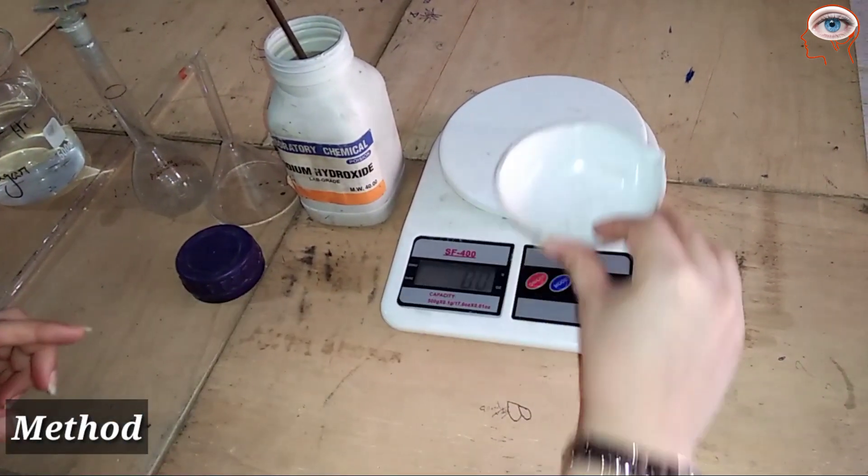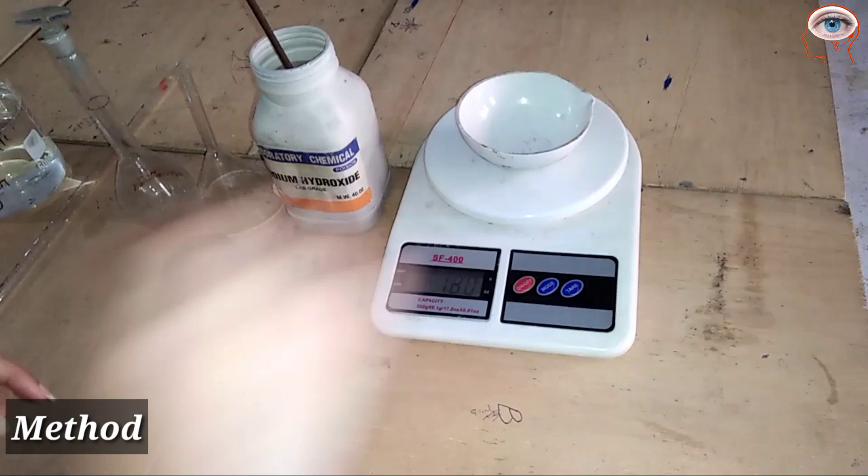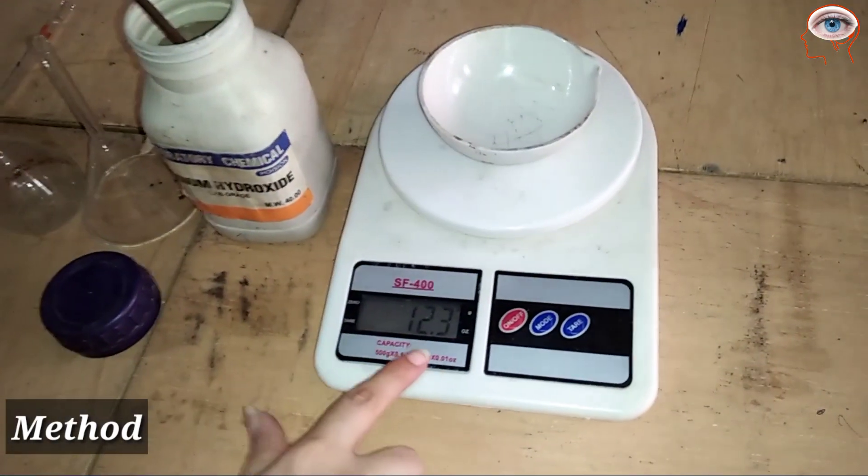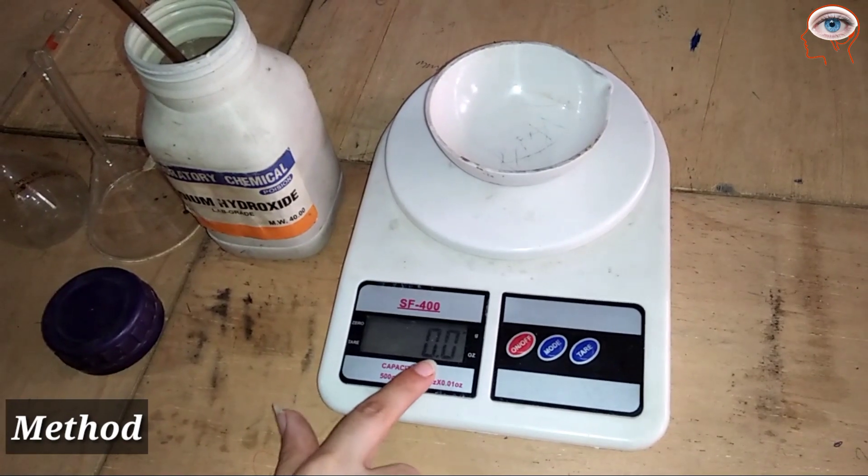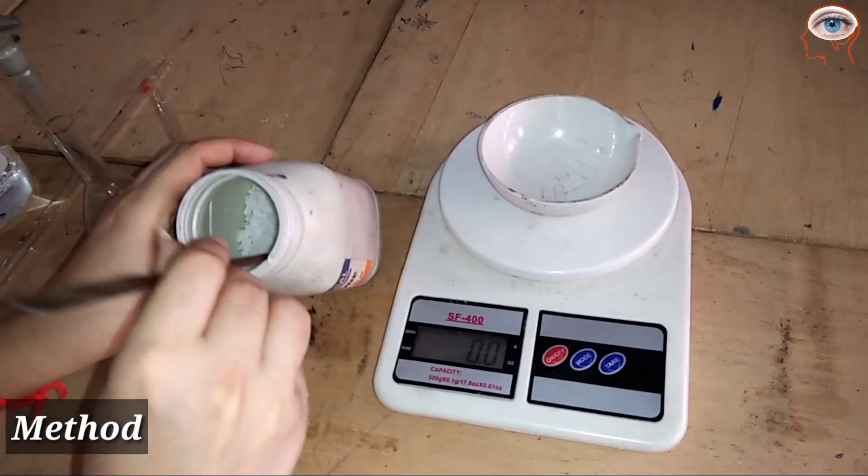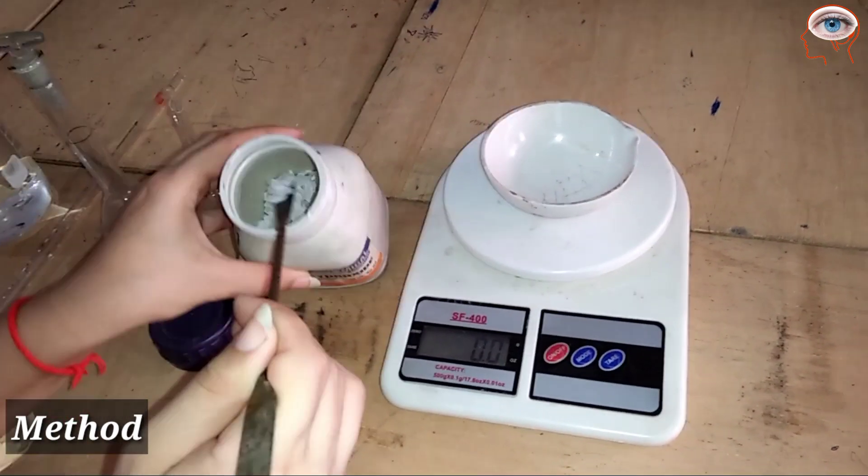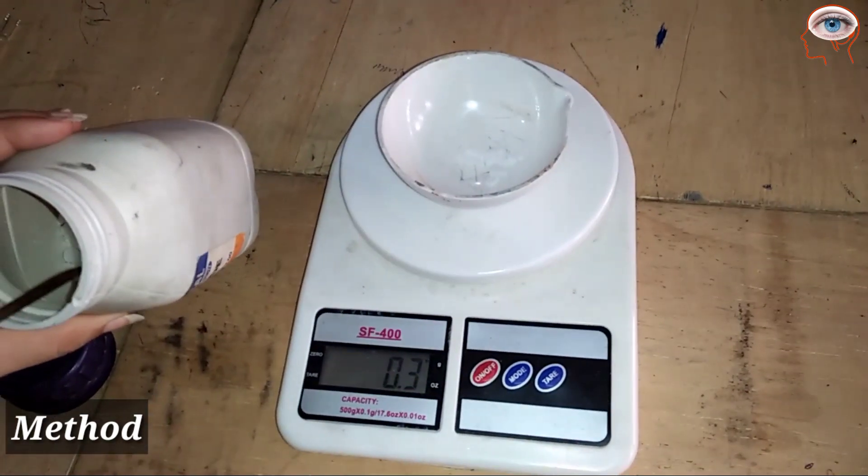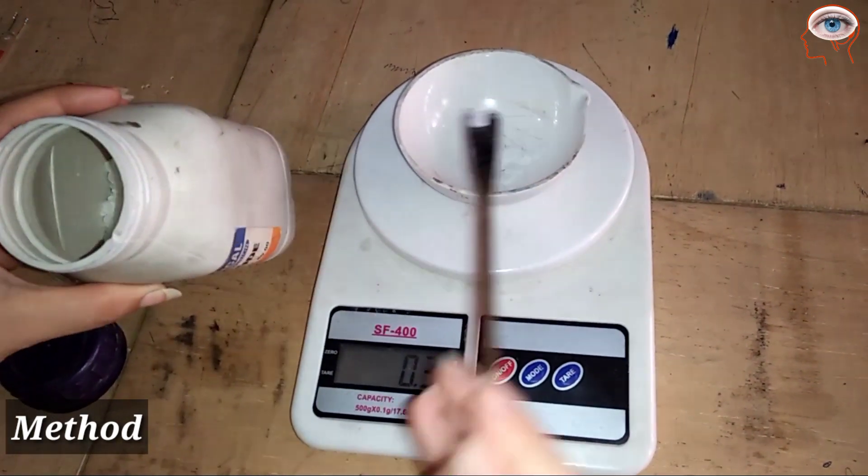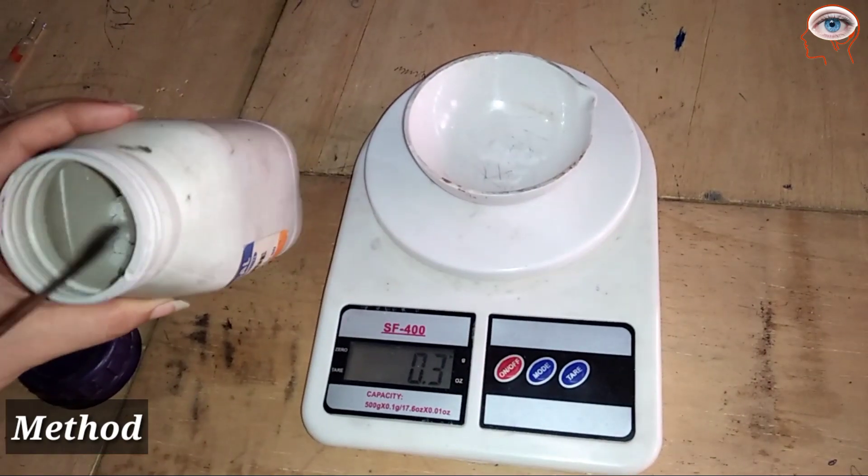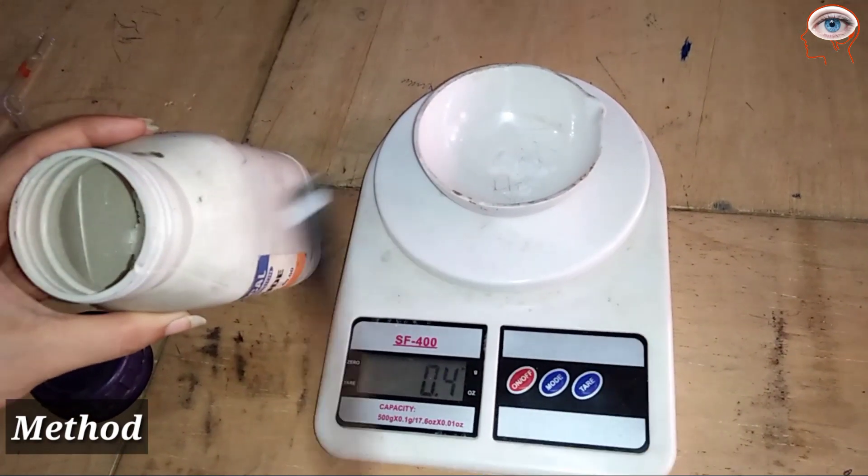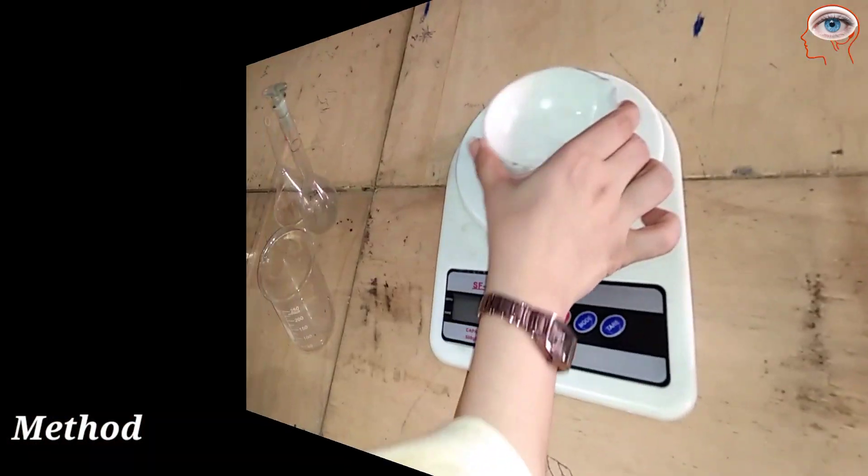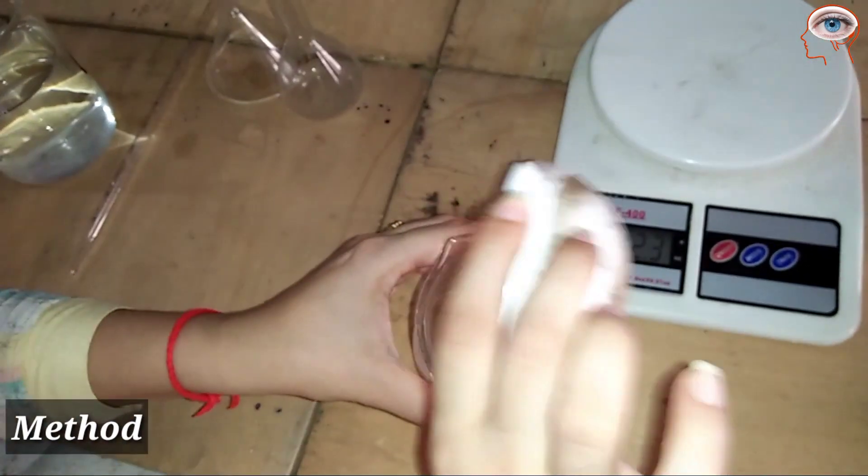First, put the china dish on the electrical balance. Press the tare button to zero out the weight of the dish. Start adding solid sodium hydroxide until the balance shows 0.4 grams. Continue adding until you reach 0.4 grams.